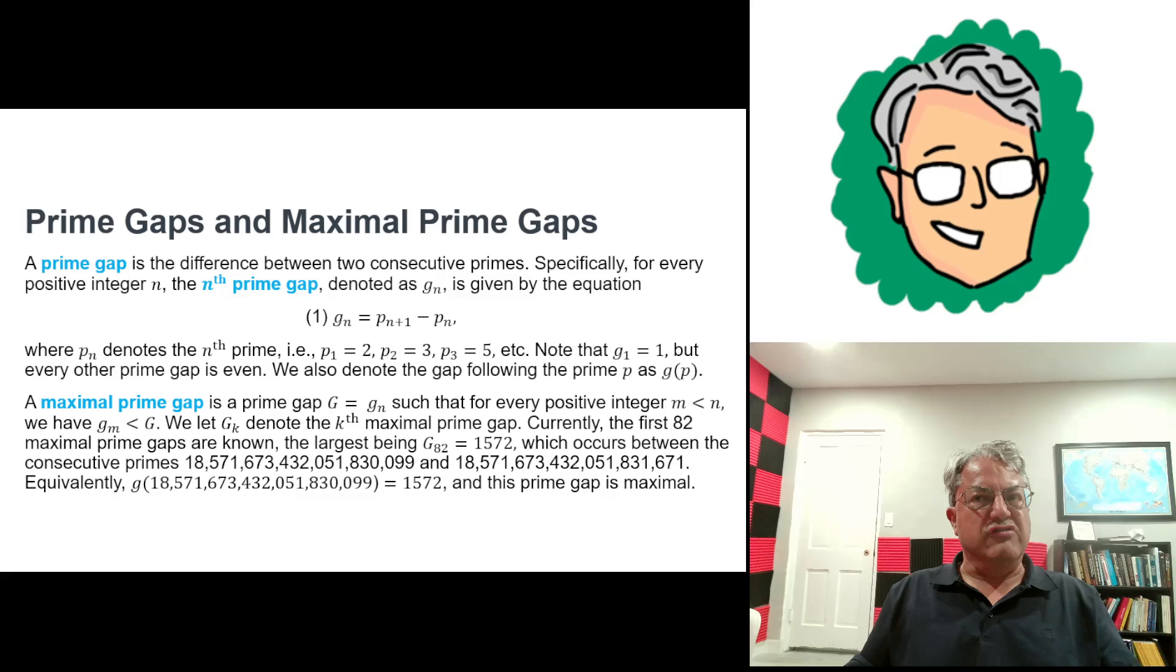And it's kind of irregular. Some gaps are big, some gaps are small. And according to the twin primes conjecture, there are infinitely many twin primes, which are primes that differ by 2. So there should be infinitely many values of n such that Gn equals 2. But we're not really interested in prime gaps themselves. We're interested in what are called maximal prime gaps.